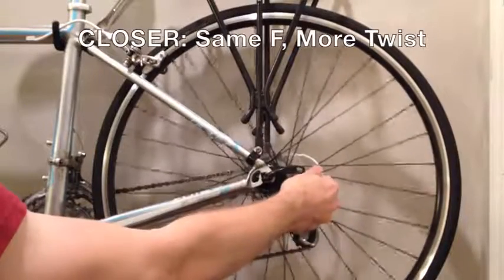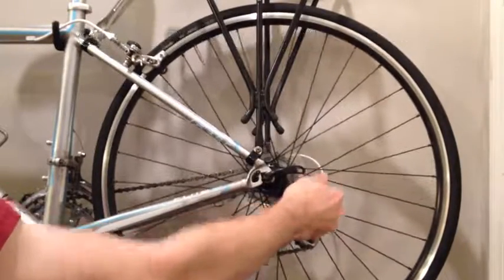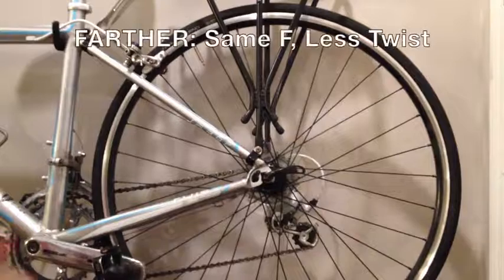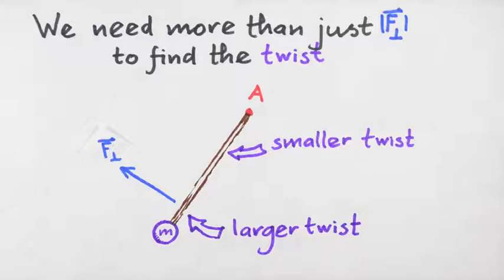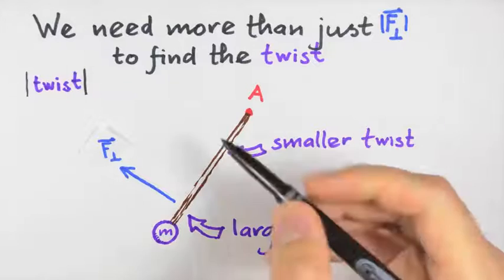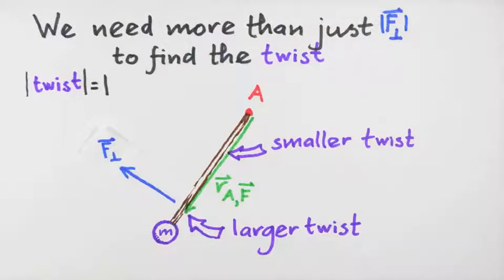You can test this by turning a wheel with the same perpendicular component of F applied either close to or far from the center of a wheel. In effect, the magnitude of the twist is proportional to the distance between the axis and the point where this perpendicular component of F is applied. This distance is simply the magnitude of R sub a F.